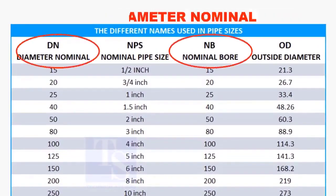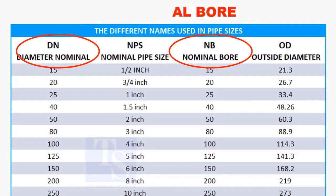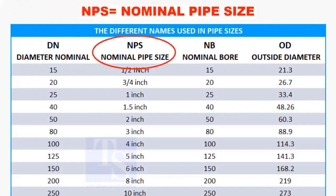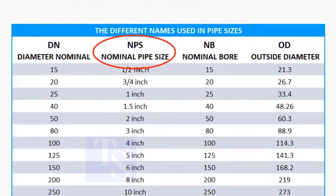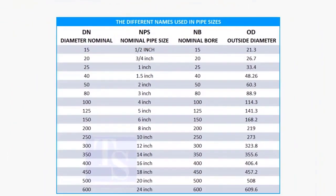DN and NB are the international and European metric methods used to describe NPS. The actual outer diameter, OD, is not the same as DN and NB. These are reference sizes only.